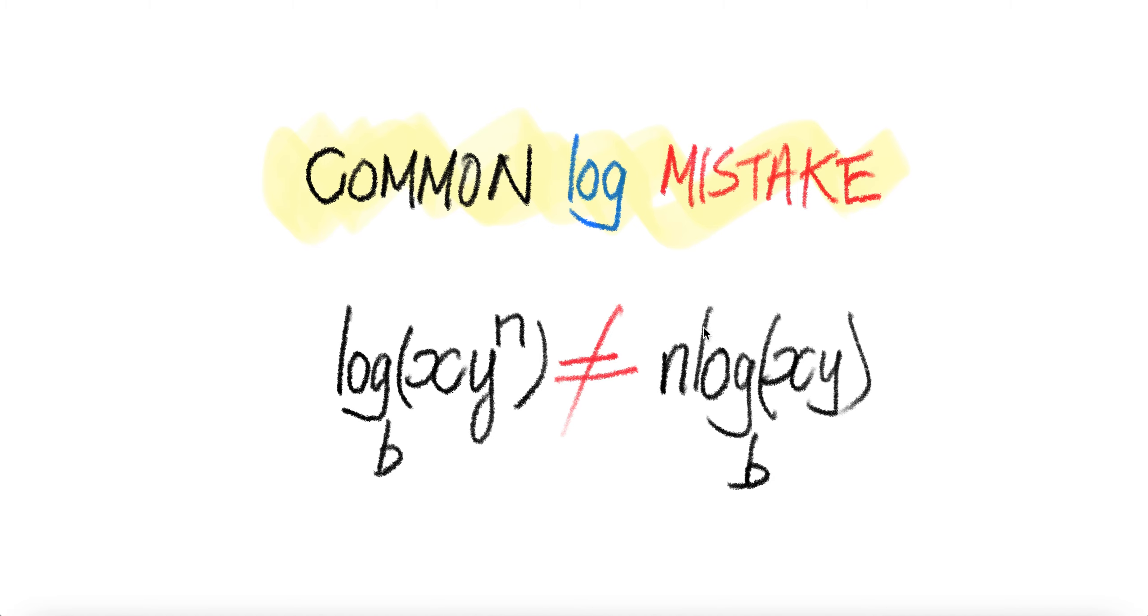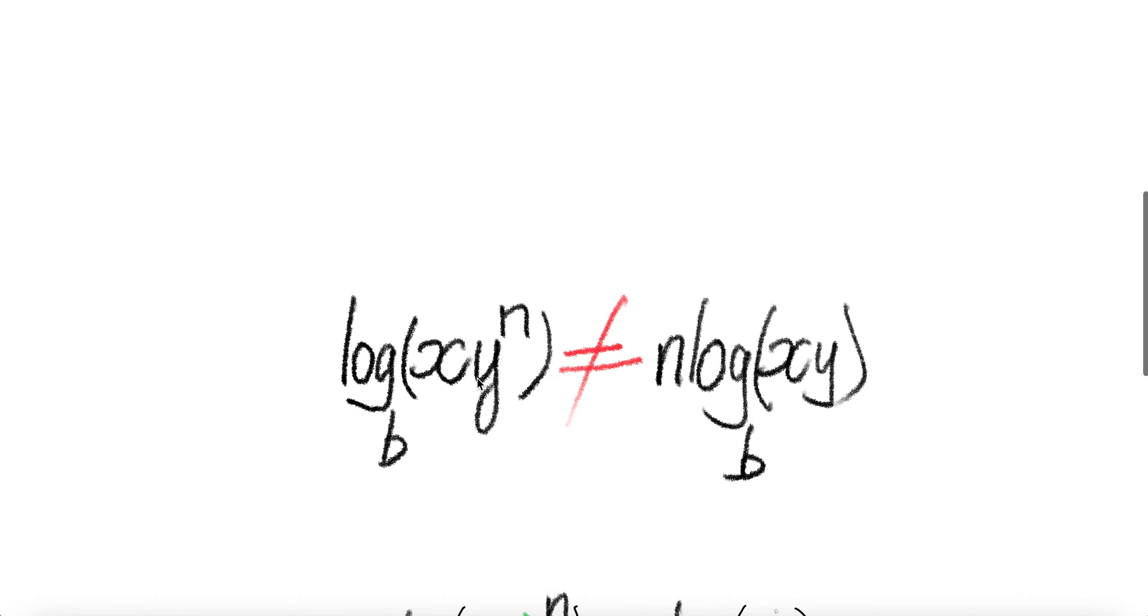Welcome everyone. Let's look at a common log mistake many students make. Log of x times y to the power n to the base B is not equal to n log of xy to the base B. They are not equal.